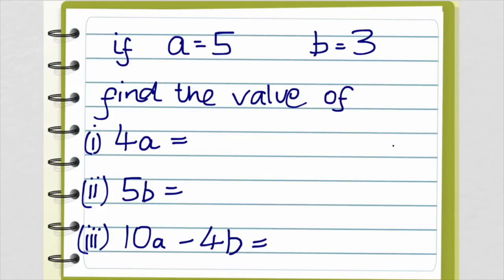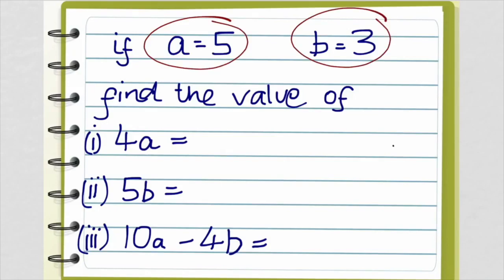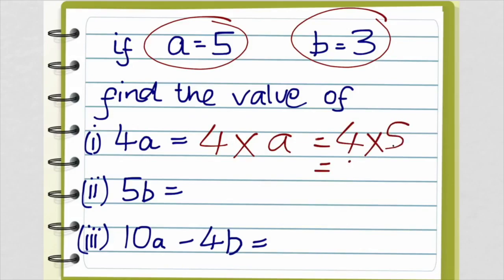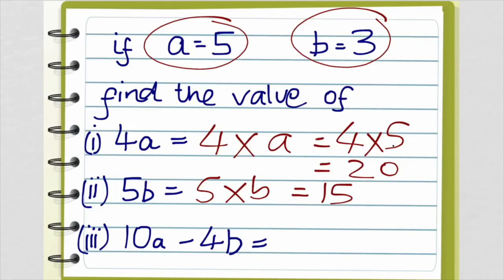If we say that a equals 5 and b equals 3: 4a means 4 times a, which means 4 times 5, which equals 20. 5b means 5 times b, which is 5 times 3, and we know that equals 15. And lastly, 10a means 10 times a, which is 50.